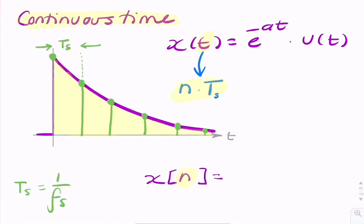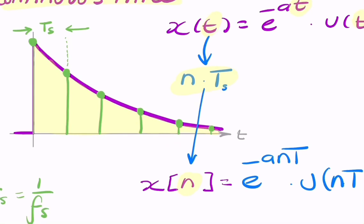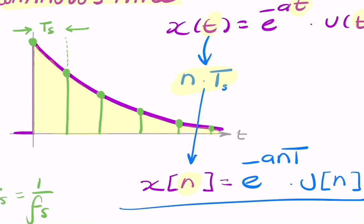So if you do that, you then have this new representation where x of n equals e to the minus a·n·T times u of n. Now it's a discrete unit step. We can replace this continuous time unit step with a discrete time unit step. Now what we have is a discrete time representation of our signal x of t.